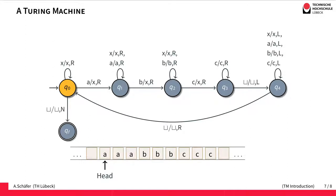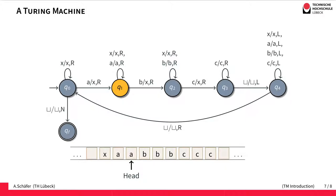To familiarize ourselves with the Turing machine as a computational model, we will look at this example. We have an input on the tape, the head is positioned on the first letter A, and initially we are in state Q0. Since the head is on an A, the enabled transition is taken: the A is changed to an X, the head moves to the right, and the state changes to Q1. Now we are in Q1 with the head positioned on A, so the transition that stays in Q1 and moves to the right is taken.